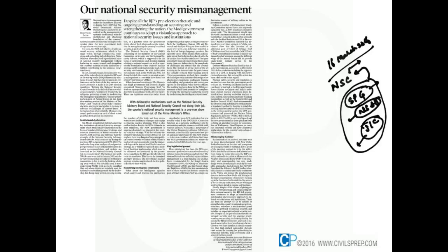The National Security Council consists of the National Security Advisor, Ministers for Defence, External Affairs, Home, Finance, and the Deputy Chairman of the Planning Commission. This is the architecture which was brought in. Previously, all this national security architecture was in the hands of the Principal Secretary to the Prime Minister.